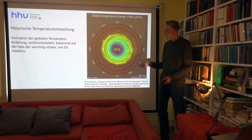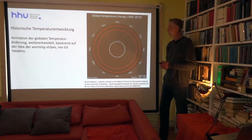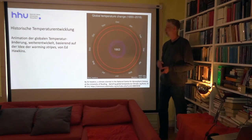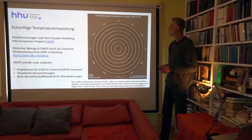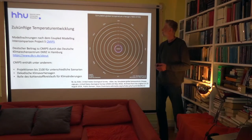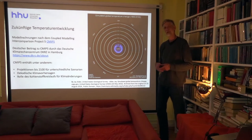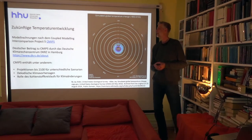Was man aber sieht: Es ist relativ gleichmäßig. Das heißt, wir haben keine große jahreszeitliche Verteilung. Oder anders ausgedrückt: Es ist im Januar um mehr oder weniger genauso viel zu warm wie es im Juli auch zu warm ist. Man kann diese Klimaspiralen auch verwenden, um zukünftige Temperaturentwicklung zu projektieren.